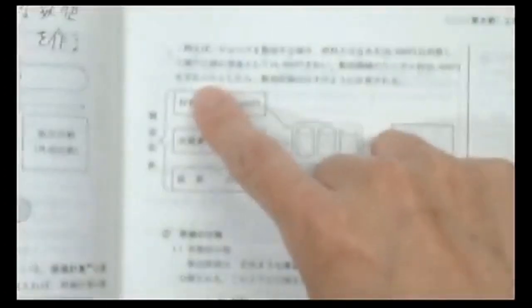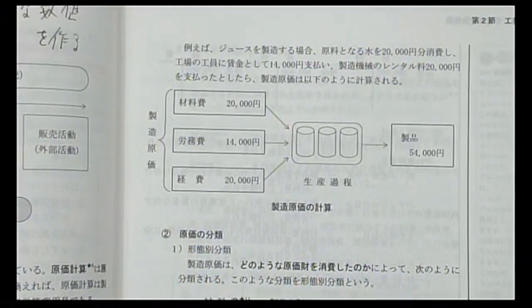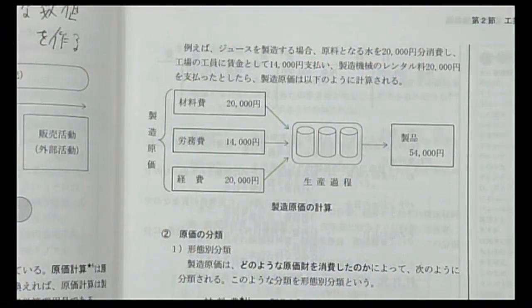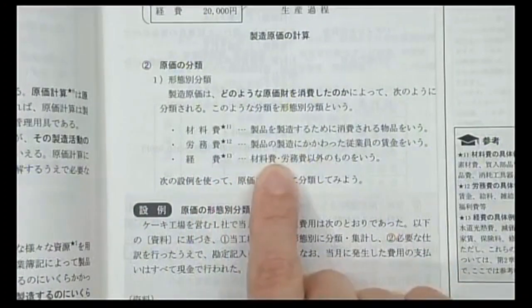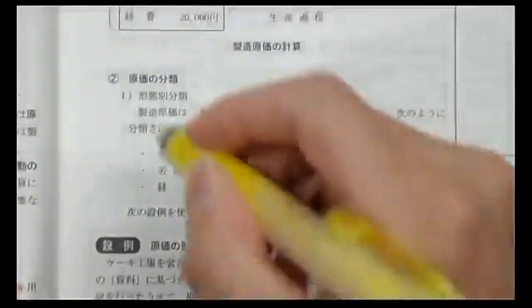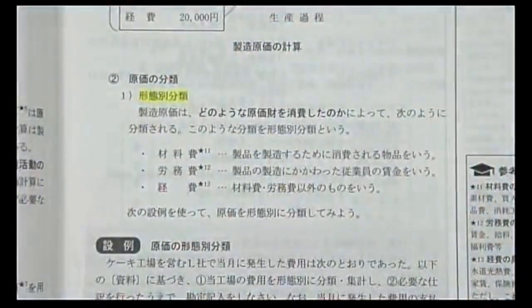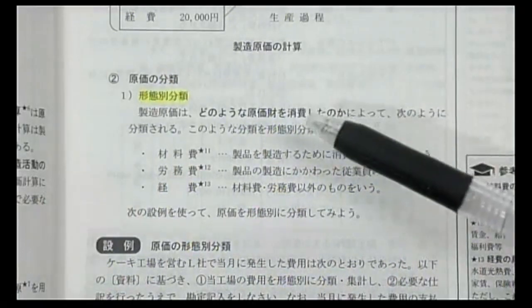製造原価を細かく分けると材料費・労務費・経費の3つに分類されます。物を作るには材料が必要で材料費がかかり、従業員の労働力を使うので労務費がかかります。材料費でも労務費でもないものを経費と言います。この分類を形態別分類と呼び、原価の最も基本的な分類方法です。